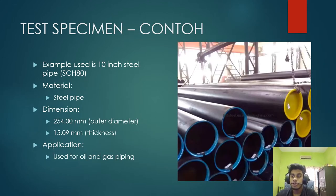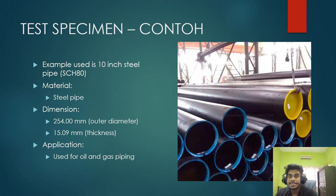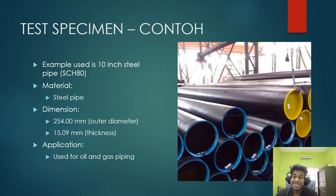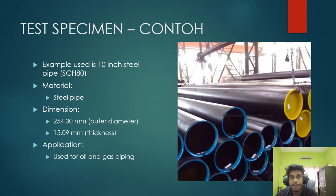For the demonstration, I am using a test specimen of a 10-inch steel pipe, CSH-80. The dimension is 10 inches, also known as 254mm at the outer diameter, with a wall thickness of 15.09mm. This is very typical in oil and gas piping.